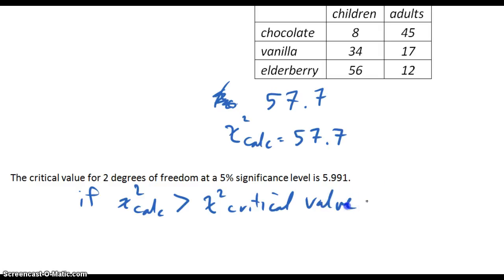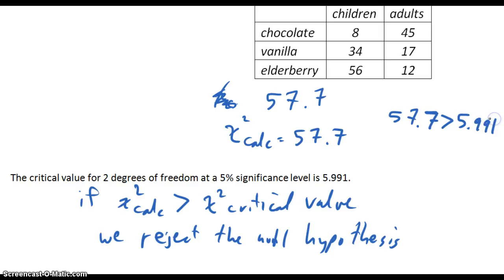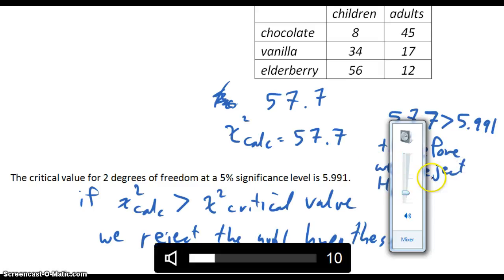And in this case you can see, the calculated value, we have 57.7 is greater than 5.991. Therefore, we reject H sub 0, which is the null hypothesis.